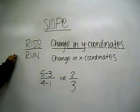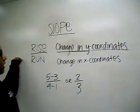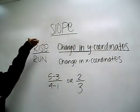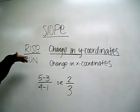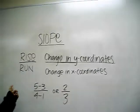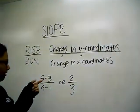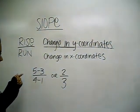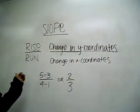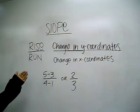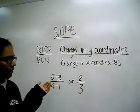Slope equals rise over run, which is the change in the y-coordinates over the change in the x-coordinates. 5 minus 3 is 2, and 4 minus 1 is 3. So your fraction is 2 thirds.